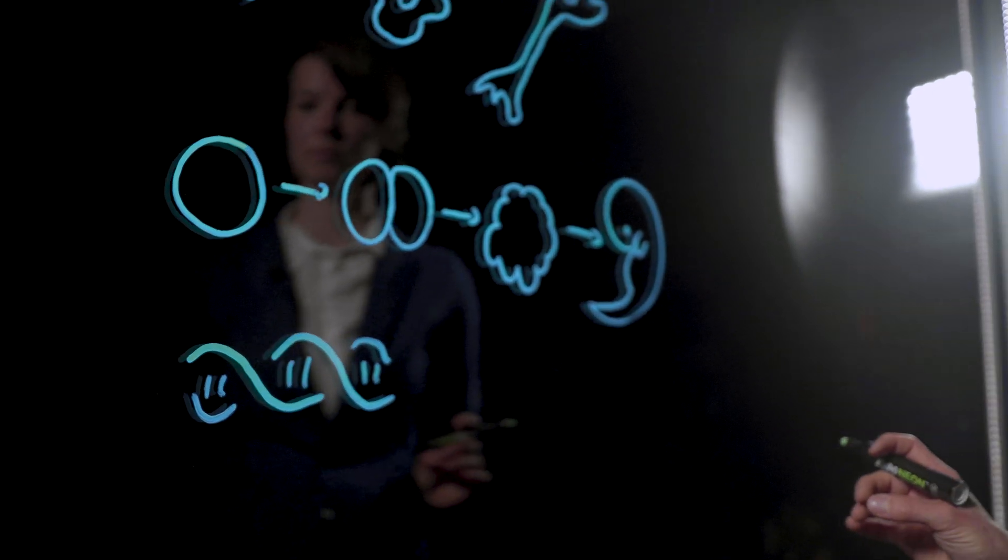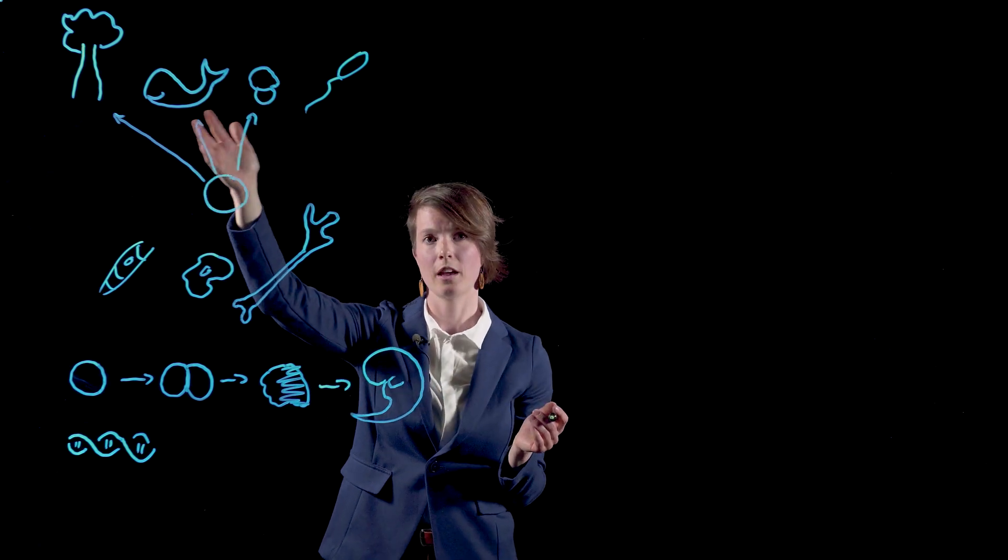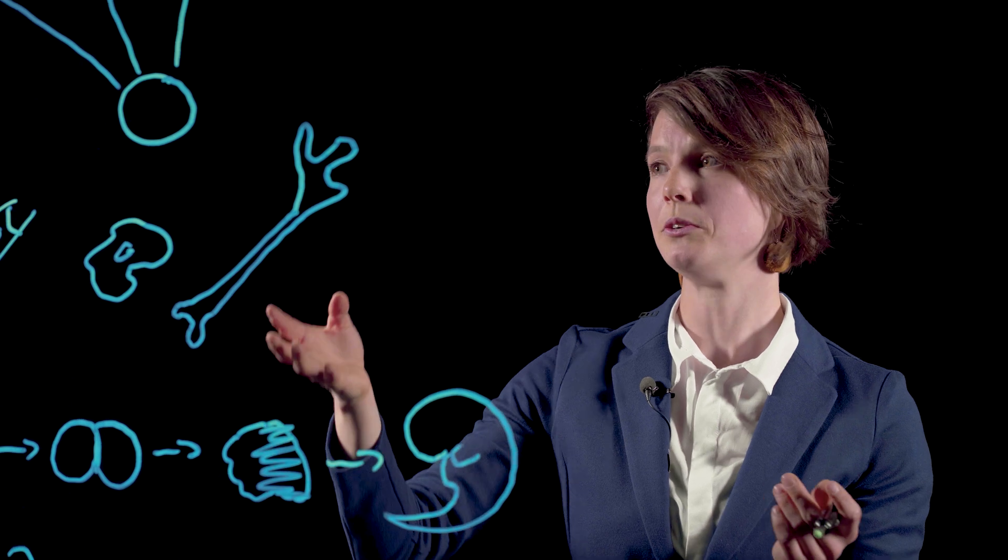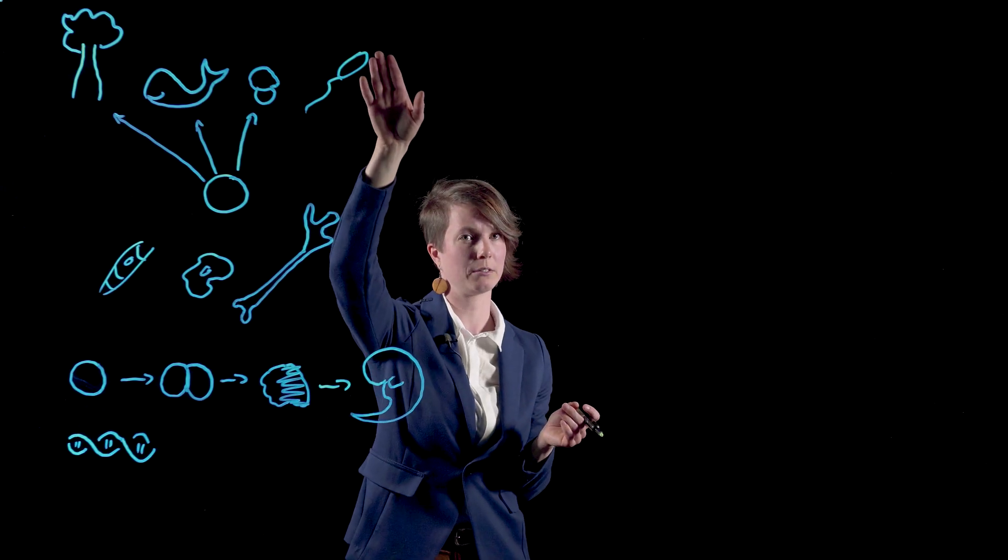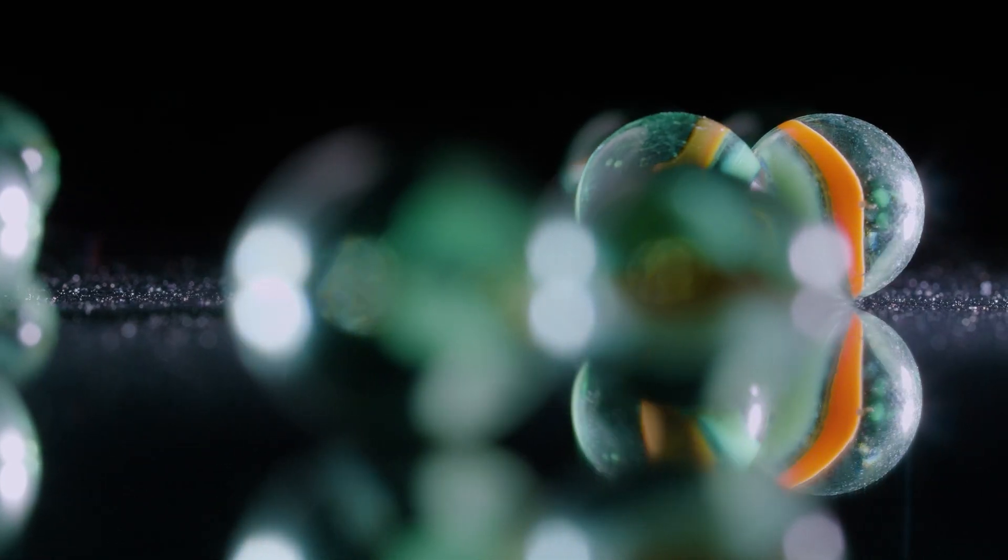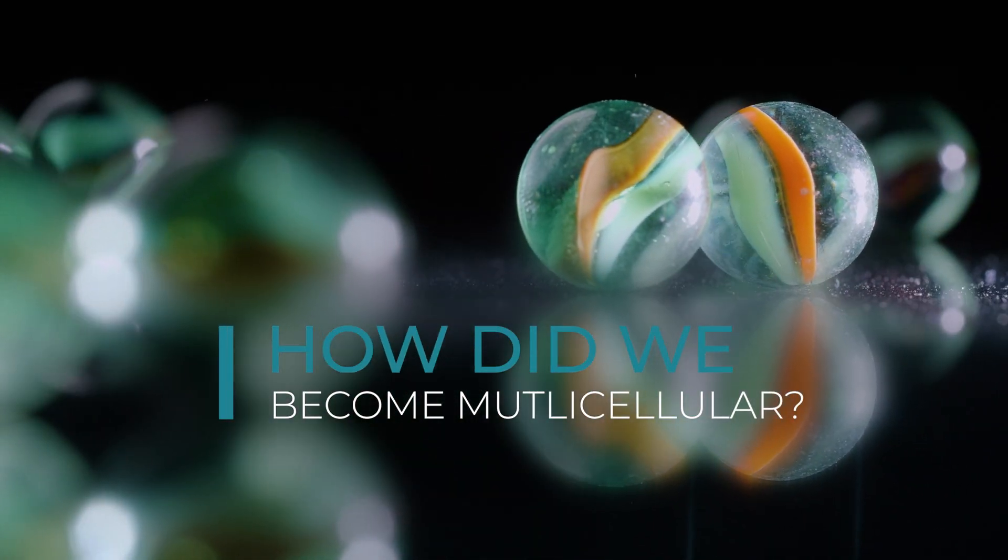Before there were plants, fungi and animals, there were only single celled organisms. Millions of years ago, some organisms must have gone from this to this. How did this transition happen? How did we become multicellular?